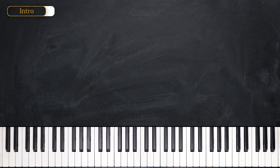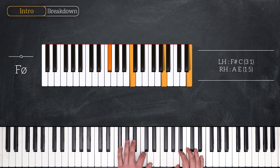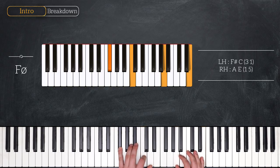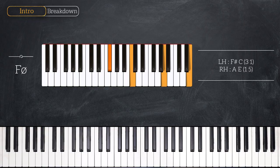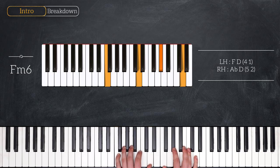and our first chord is F sharp half diminished. In the left hand we have F sharp C, and in the right hand A E. Then we move to an F minor 6. In the left hand we have F D, and in the right hand A flat D.